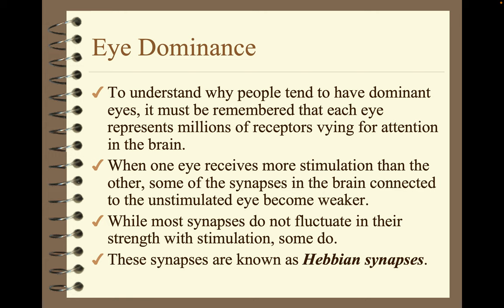To understand why people tend to have dominant eyes, it must be remembered that each eye represents millions of receptors vying for attention in the brain. When one eye receives more stimulation than the other, some of the synapses in the brain connected to the understimulated eye become weaker. While most synapses do not fluctuate in their strength with stimulation, some do — these synapses are known as Hebbian synapses.